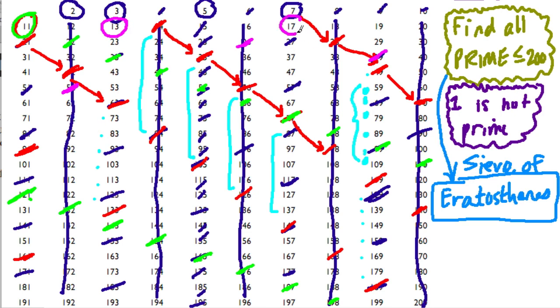17 is prime. Okay. 19 is prime. 23, right? None of the factors before go into it. 29 is prime. Look how many prime numbers there really are here. 31 is prime. 37 is prime. 47 is prime. 43 is prime. And I think so far this is making sense, right?